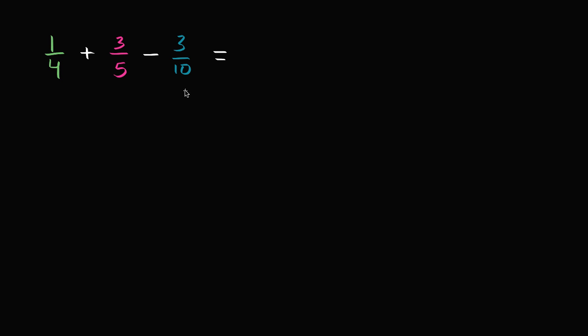And one way to find the least common multiple is take the largest of these numbers and look at their multiples and keep increasing the multiples until you find one that's divisible by the other two. So for example, I could start at 10. 10 is divisible by 5, but it's not divisible by 4. So then we can go to 20. 20 is divisible by both 5 and 4. So the least common multiple of 4, 5, and 10 is 20.